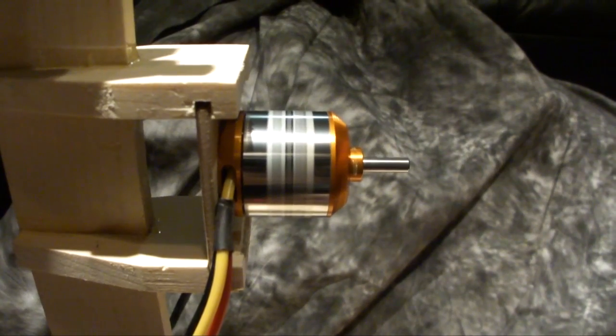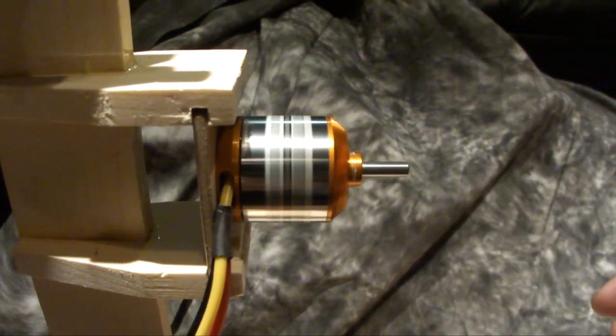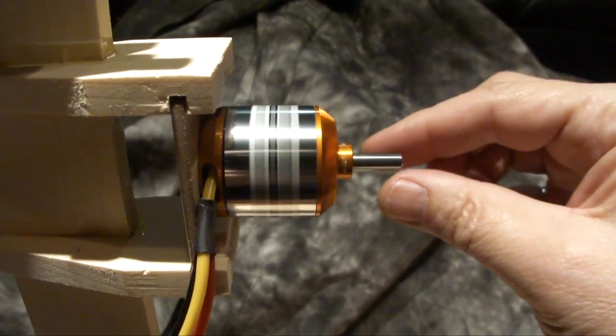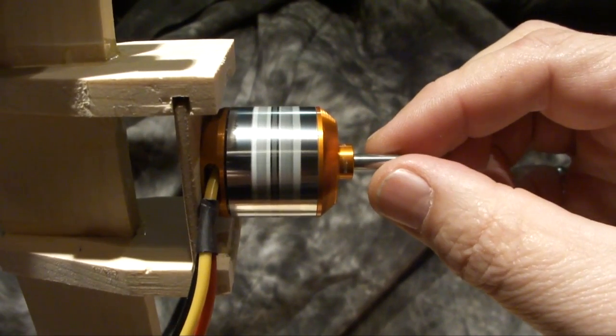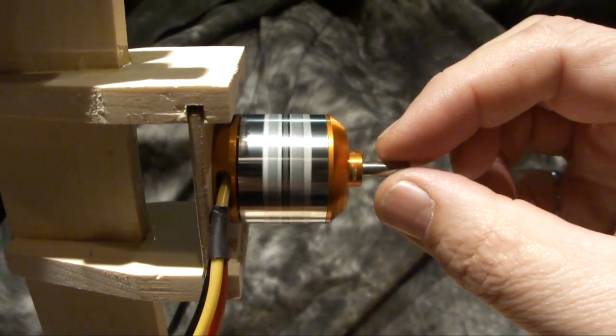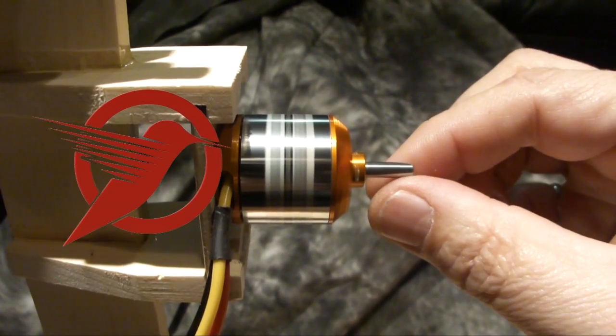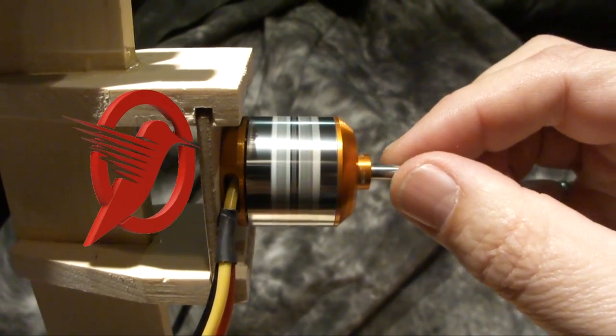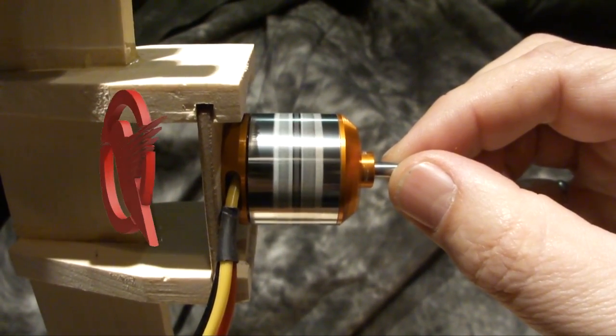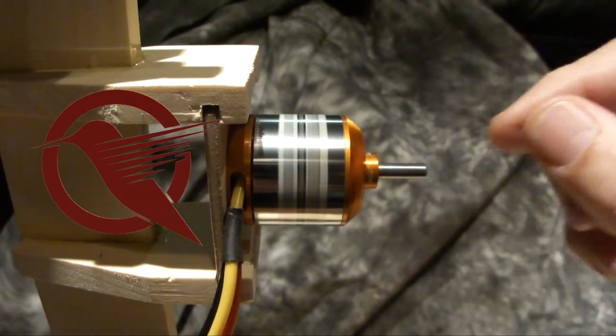As an aside, if you don't have a dial gauge to check your motors, you can check them by removing the props and spinning up the motor and then feeling the end of the shaft. If you feel a tingle in your fingertips, the shaft is bent. If you feel only a drag on your fingertips, the shaft is straight.